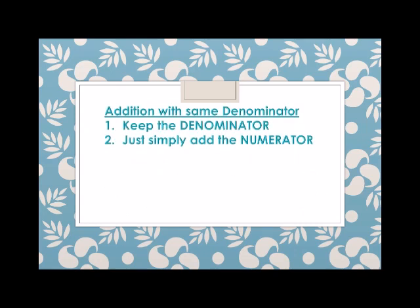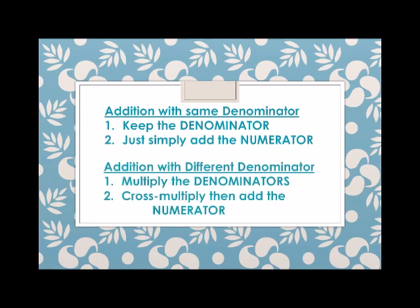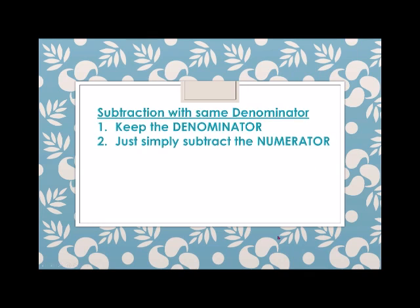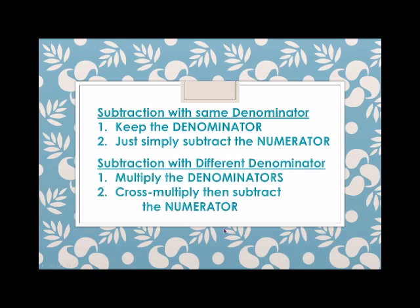So again, for addition with same denominator: keep the denominator and simply add the numerator. For addition with different denominator: multiply the denominators, then cross multiply, then add the numerators. For subtraction with same denominator: keep the denominator and simply subtract the numerator. For subtraction with different denominator: multiply the denominators, then cross multiply, then subtract the numerators.